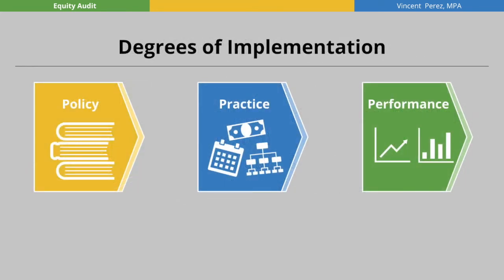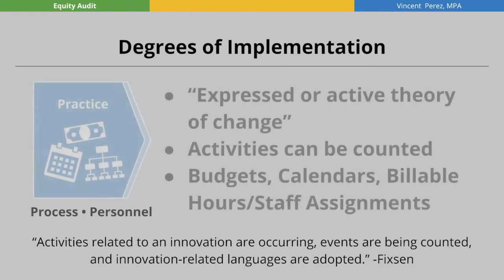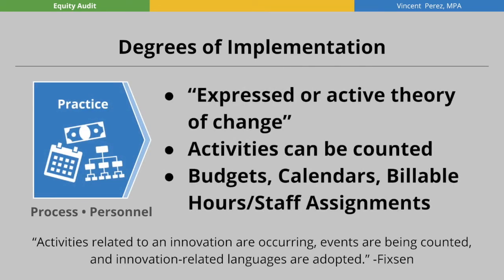The degrees of implementation consist of policy, practice, and performance. The policy is a recorded theory of change — essentially what makes it to paper, what gets codified, and what theoretical frameworks and research back up your policies. Practice is also the process. Personnel can be counted. This is the expressed or active theory of change. These are the budgets, calendars, and billable hours that can be documented in our practice.